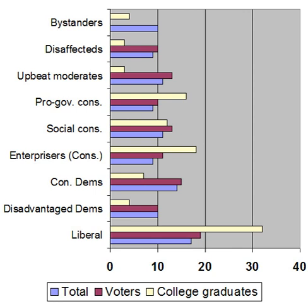A study by the Pew Research Center found that a significant percentage of Democratic voters were social conservatives who only voted for the Democratic Party due to their more left-leaning economic methods, as well as their long-time affiliation with the party, especially among Dixiecrats and blacks. This study divided conservatives into four groups: enterprisers, social conservatives, pro-government conservatives, and conservative Democrats. Conservative Democrats were the most common typological group comprising 14% of respondents, while enterprisers and pro-government conservatives were the least common at 9%. All conservative demographics were religious, with less than 10% identifying as secular, compared to 22% among liberals.